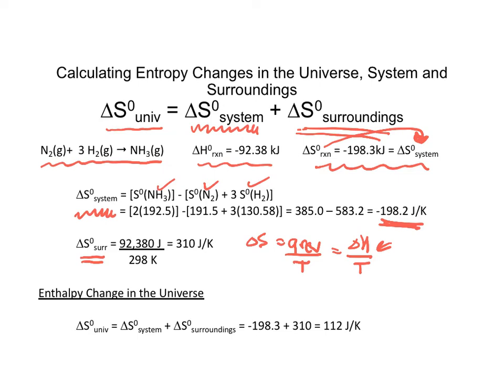Why did we change the sign? Well, the heat is being transferred to the surroundings. It is making them more disordered. And that will give us a positive sign here. So when I do my surroundings calculation using my ΔH⁰, I have to turn it from kilojoules to joules. It'll be 92,380. I have to do my temperature at Kelvin, and that would be 298 Kelvin.